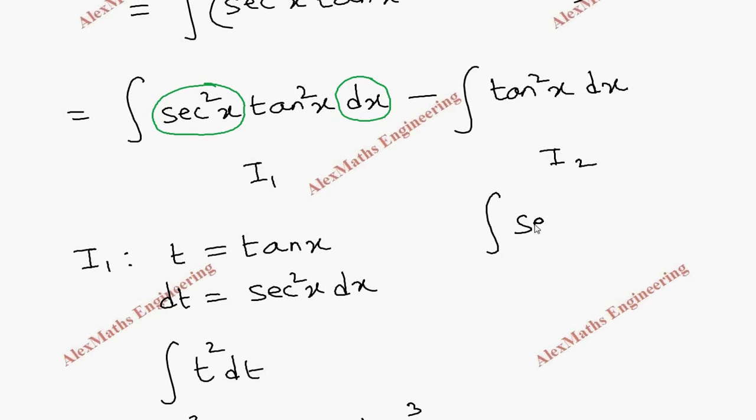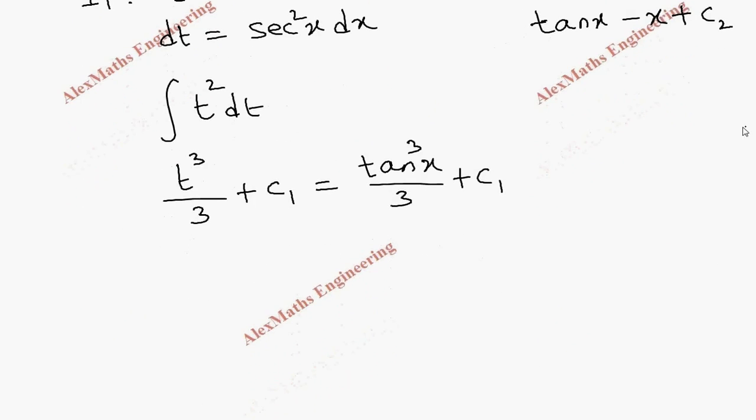Coming to I2, let's substitute tan squared x as secant squared x minus 1, then only we can apply the formula. The integration of secant squared x is tan x, and minus 1 is minus x plus c2.